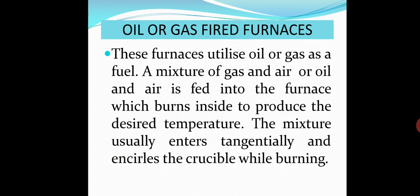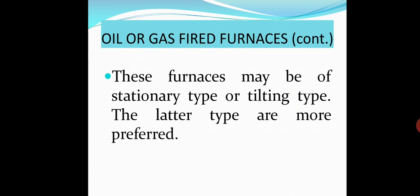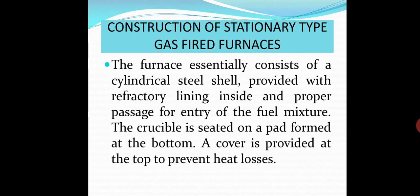The mixture usually enters tangentially and encircles the crucible while burning. These furnaces may be of stationary type or tilting type. The latter type are more preferred because it can tilt, help removing of the crucible. The furnace construction of stationary type gas fired furnaces. The furnace essentially consists of a cylindrical steel shell provided with refractory lining inside and proper passage for entry of the fuel mixture, gas and air. The crucible is seated on a pad formed at the bottom. A cover is provided at the top to prevent heat losses.